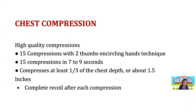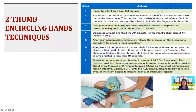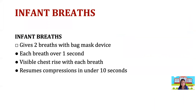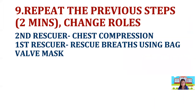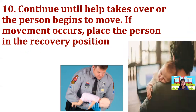For two-rescuer infant BLS, use the two-thumb encircling technique: both thumbs on the front of the chest, four fingers wrapped around the back. Perform 15 compressions, compressing about 1.5 inches. Rescuer two gives two breaths using the E-C clamp technique. After five cycles, check again; if the patient moves, perform the recovery position.